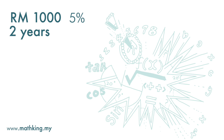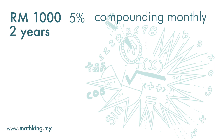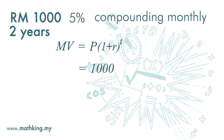Next question: what if we put money in a bank for two years, compounding monthly? Again, the principal is one thousand and the interest is five percent per annum. The matured value is principal times one plus interest rate to the power of time period. We cannot just use five percent because five percent is for one year. If we compound interest monthly, the interest is five percent divided by twelve, and since we compound it monthly for two years, the time period t is twelve times two, which is twenty-four months.